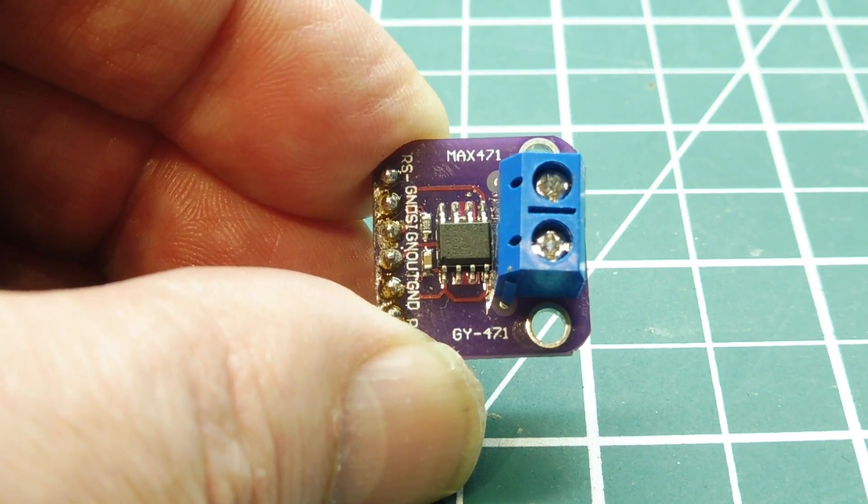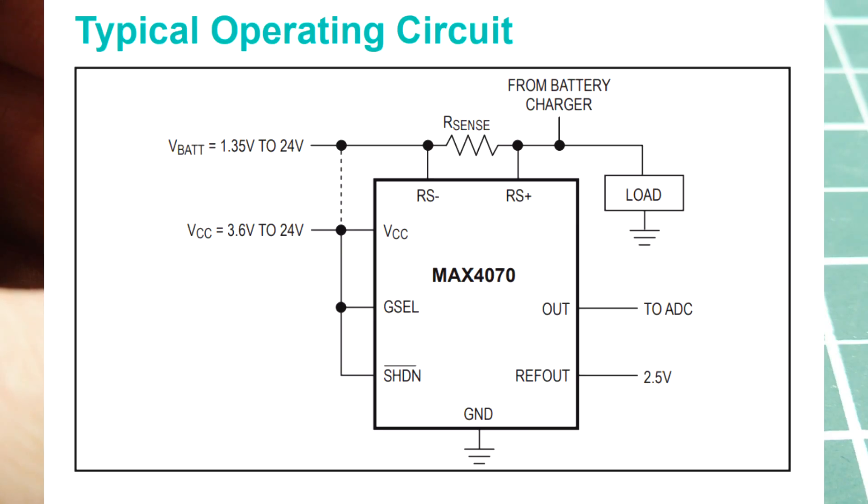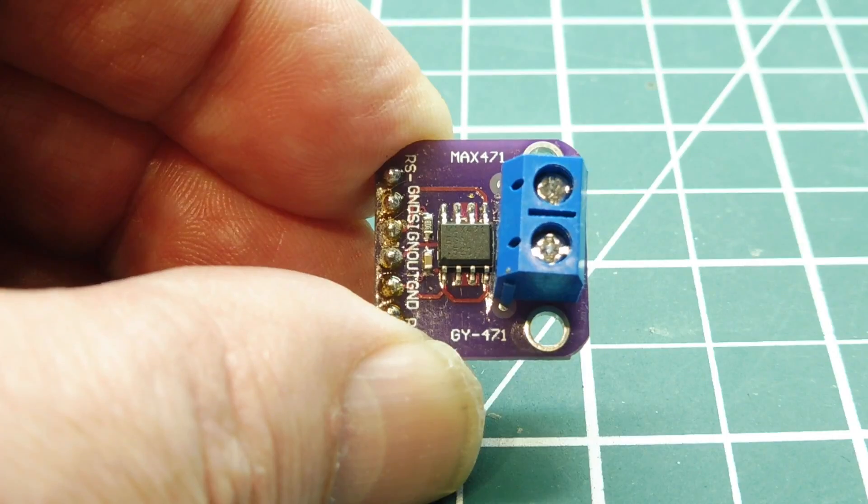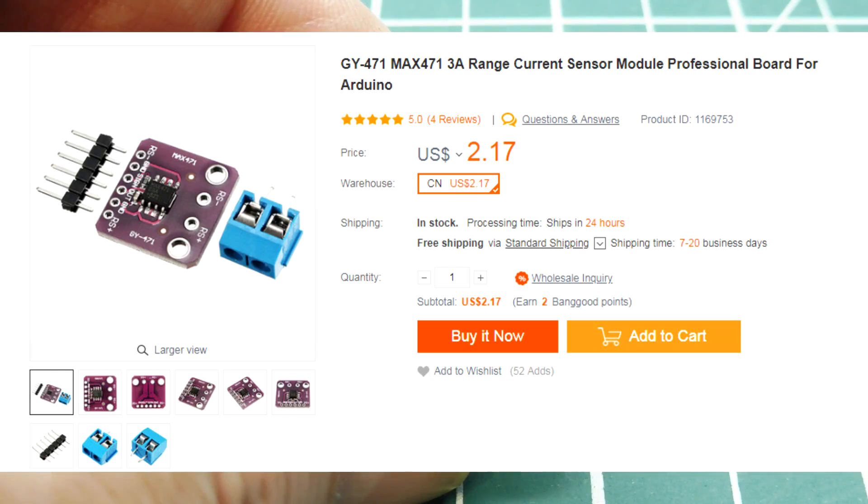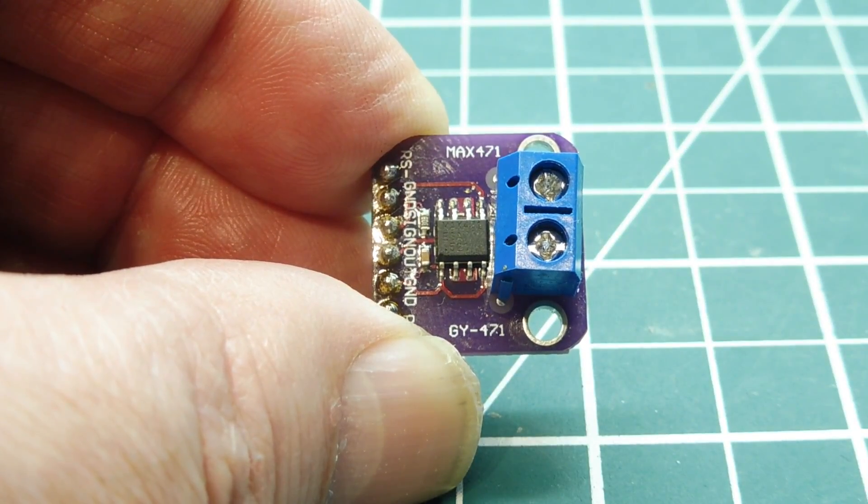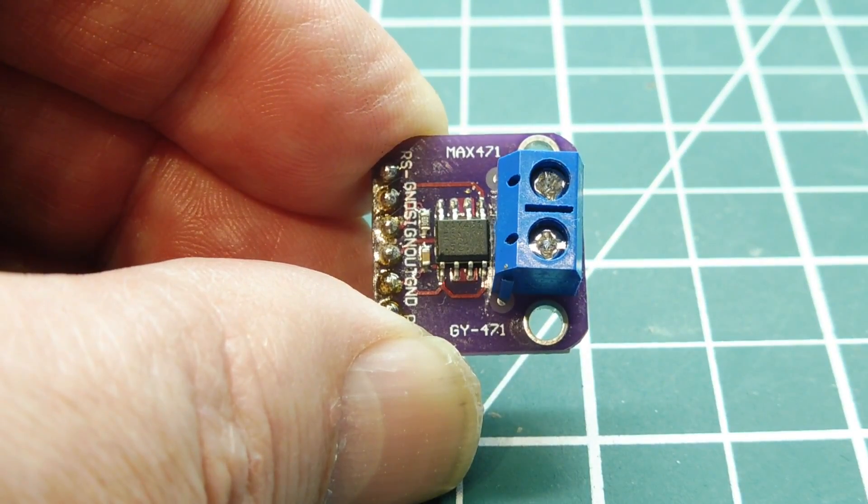Maxim does not make the MAX471 anymore. The replacement is the MAX4071, and the difference is the sensing resistor is external, so you have to come up with your own external sensing resistor. But there's plenty of these breakout boards available online and they're pretty inexpensive. I hope this video gives you guys some ideas on how to add current sensing detection to your projects.